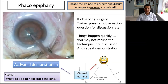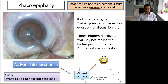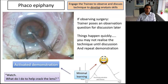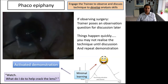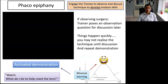There is something called an activated demonstration. For cases where the trainee probably shouldn't be operating because it's too complex, ask them to look down the microscope and give them a question to discuss afterwards. Things in cataract surgery happen very quickly and the trainee may not even realise what you're doing as the expert. For example: what do I do to help crack the lens? Even in slow motion, many viewers are still wondering how it was cracked.